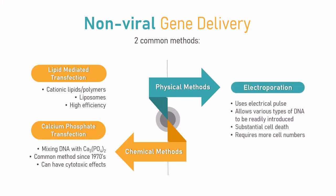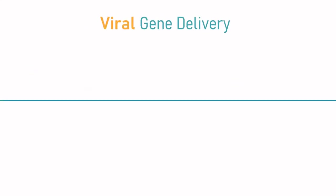Electroporation uses electrical pulses to physically create temporary holes in cell membranes and allow foreign DNA to enter the cells. This method allows various types of DNA to be readily introduced into cells without limitations of DNA size. The main concern with this method is the substantial cell death caused by the high voltage pulses, and the use of this method requires more cell numbers compared to the chemical transfection methods. While non-viral methods are sufficient to deliver foreign genes into cells, they are transient expressions most of the time and the efficiency can be low depending on the cell type. So in order to maintain gene expression with high gene delivery efficiency, most researchers will opt for viral vectors.